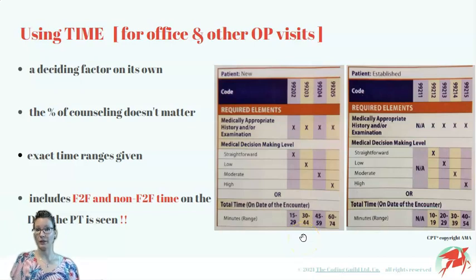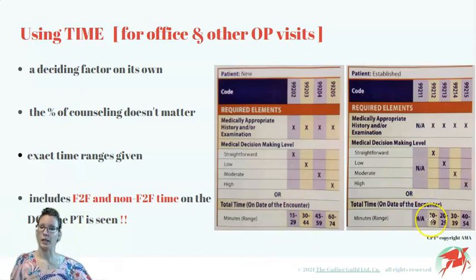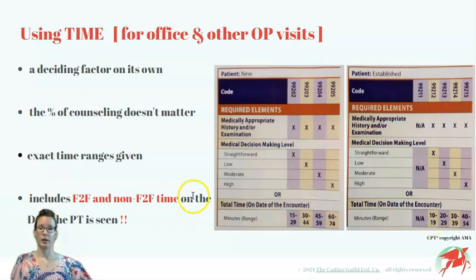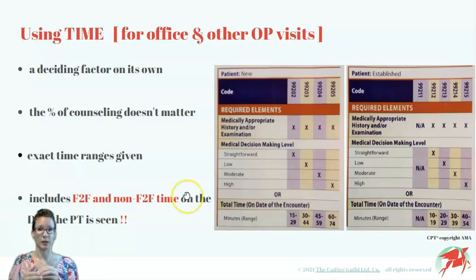We can code visits based on the exact minutes the provider gives us. Notice that the lowest duration we must reach, if we want to level based on time, is 15 and 10 minutes. If our visit is shorter than that, we will have to default back to leveling the service based on medical decision making only. And very importantly — and this is the biggest change — time from now on can be credited for pre- and post-visit activities as well. We are not restricted to the face-to-face time the provider spends with the patient.